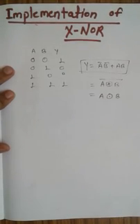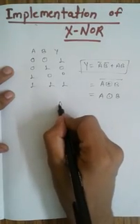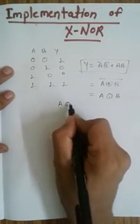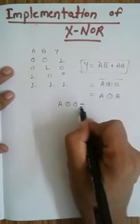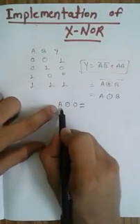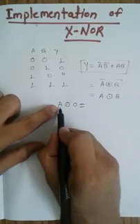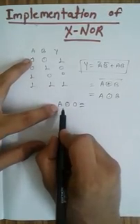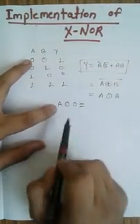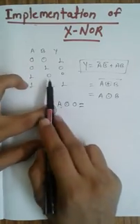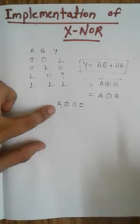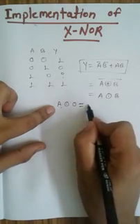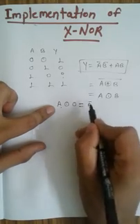There are some properties of XNOR gate. A XNOR 0: if A is 0, then the result becomes 1; if A is 1, the result becomes 0. So A XNOR 0 gives A̅ — the complement of A.